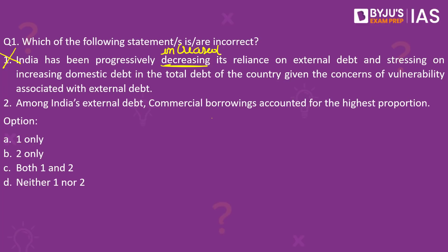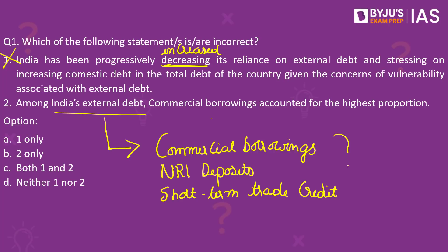Moving on to the second statement: India's external debt consists of many components. The major ones include commercial borrowings, NRI deposits, and short-term trade credit. These three alone account for around 78% of India's total external debt. Among these three, commercial borrowings account for the highest proportion. So statement 2 is correct. Given that the question asks for incorrect statements, the correct answer to this question is option A, one only.